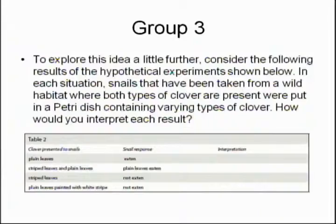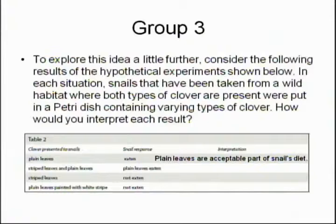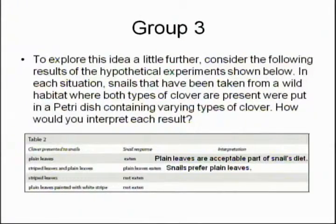So how would you explain those results? What we'd like you to do is interpret each one of those lines. The plain leaves were eaten — what would be your interpretation of that? They were safe and so they ate them. Plain leaves are an acceptable part of a snail's diet. How about striped leaves and plain leaves, where only the plain leaves were eaten? Because the snails found that the striped leaves don't taste good — snails prefer the plain leaves for some reason.